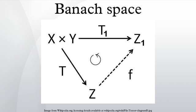Completeness of a normed space is preserved if the given norm is replaced by an equivalent one. All norms on a finite-dimensional vector space are equivalent. Every finite-dimensional normed space over ℝ or ℂ is a Banach space.